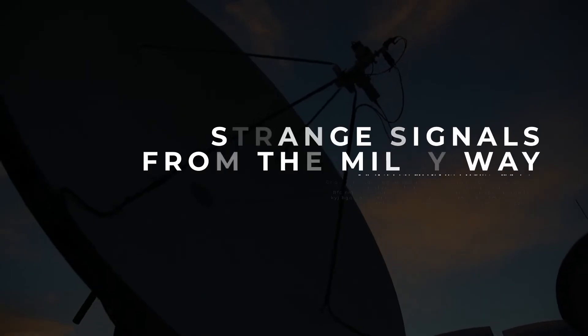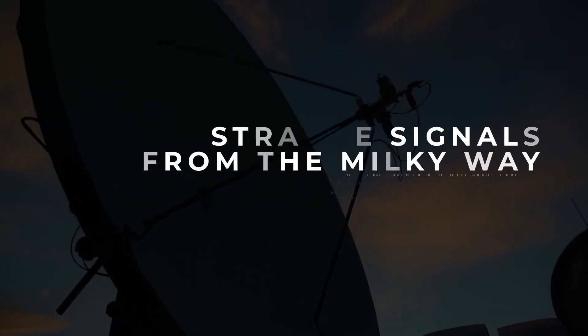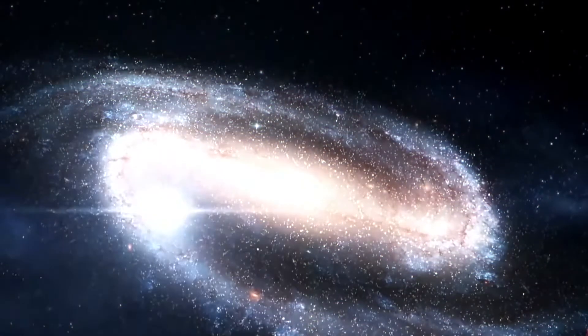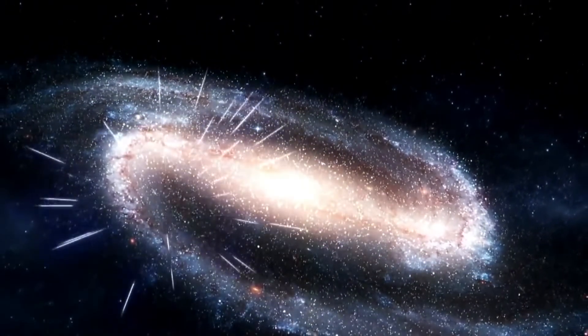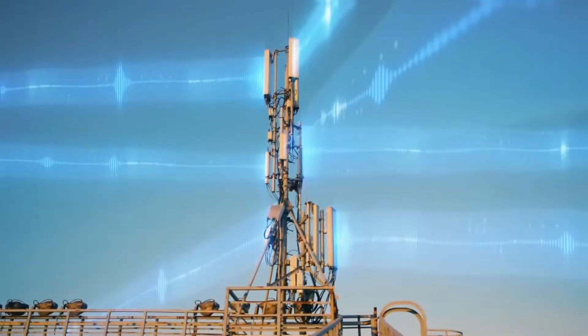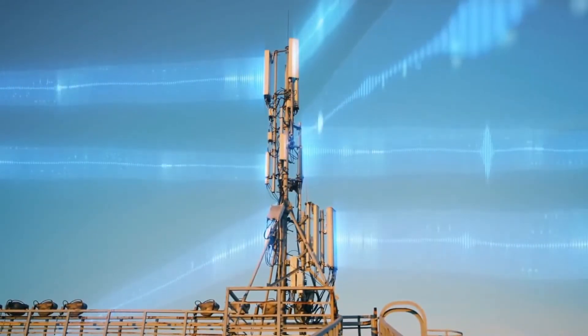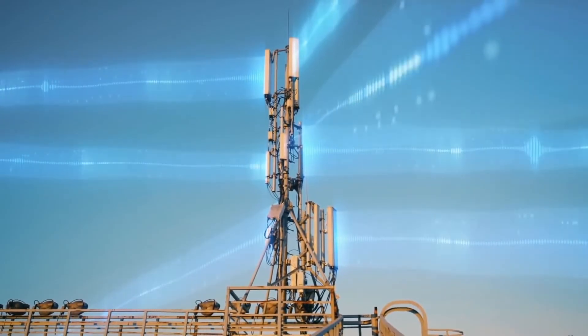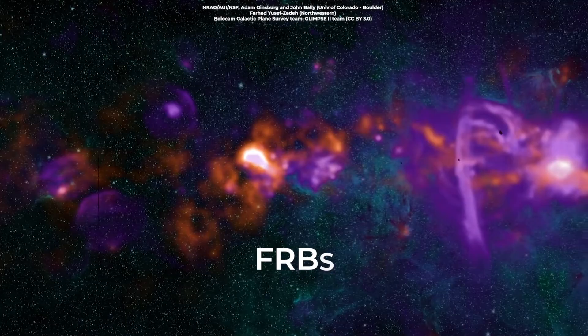Strange signals from the Milky Way. These strange signals are not only coming from deep space. Astronomers have also found these signals coming from sources within our own galaxy. In 2020, two separate radio telescopes on the ground detected an extremely intense pulse of radio waves. These radio pulses were classified as FRBs.